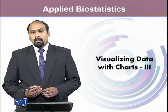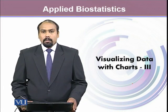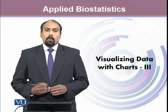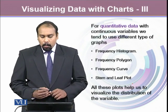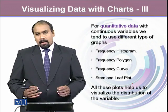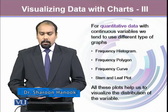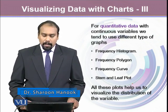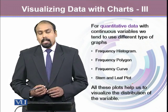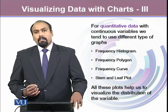So far we have talked about charts for qualitative variables. In this module, we're going to look at different charts for quantitative variables. For quantitative variables, especially continuous variables — though we can also do it for discrete variables — we tend to use different types of graphs: frequency histogram, frequency polygon, frequency curve, and stem-and-leaf plot. All these plots help us to visualize the distribution of our variable.